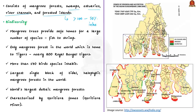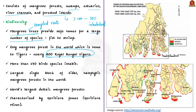Sundarbans also has faunal and floral diversity. It houses many rare and endangered animals including aquatic mammals, tigers, birds and reptiles. The tangled mass of the roots of mangrove trees provides safe homes for a large number of species from fish to shrimp. Sundarbans is home to nearly 200 Royal Bengal tigers, and it is the only mangrove forest in the world that is home to tigers. More than 170 bird species are also known to inhabit these mangrove forests.